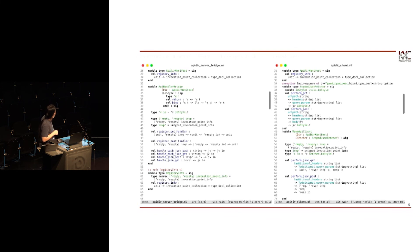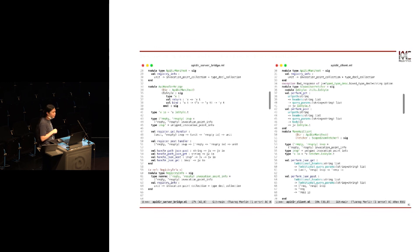After you make the handler bridge and register all your handlers, you can use handle_path_json_post or handle_path_json_get, passing the contextual path as well as the argument to have routing sorted out for you. Or if you already know the invocation point, you can also use that directly.